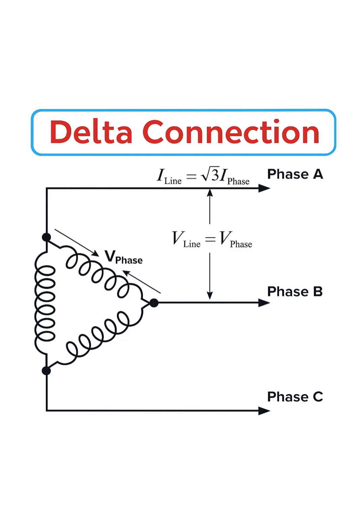Now let's look at the important relationships, starting with voltage. The voltage across any single coil is the phase voltage, or V phase. The voltage between any two of the main lines, like between phase A and phase B, is the line voltage, or V line.